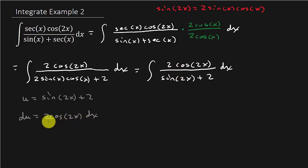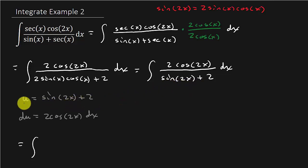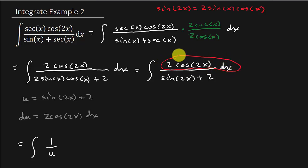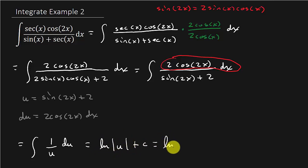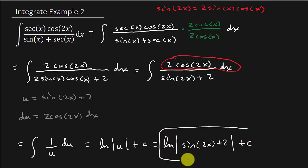I've got my numerator right here — 2 cosine 2x dx. That matches du exactly. So now I can make the substitution. In the place of sine 2x plus 2, I'm going to put u. And 2 cosine 2x dx is du. So this is just the integral of du over u, which is the natural log of the absolute value of u plus C, which equals the natural log of the absolute value of sine 2x plus 2, plus C. And there's your answer.